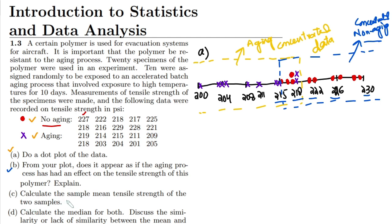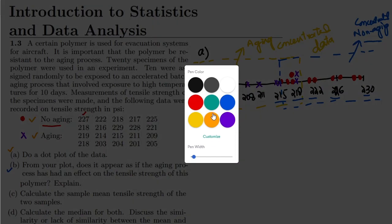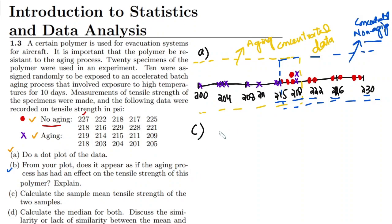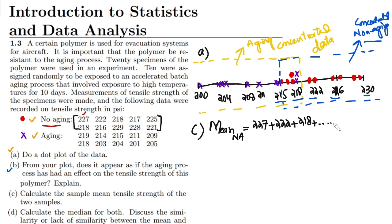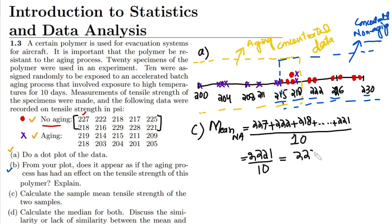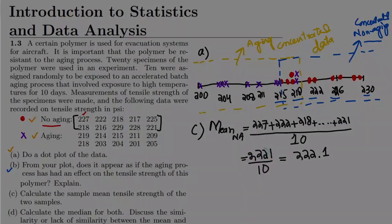In part c we have to calculate the sample mean tensile strength of the two samples. To find the mean of the non-aging data, I have to add all the samples — 227 plus 222 plus 219, up to the last one which is 221 — and divide by the total number of samples, which is 10. I have previously calculated it: 2221 divided by 10 gives 222.1 psi, and that is the mean tensile strength of the non-aging data.